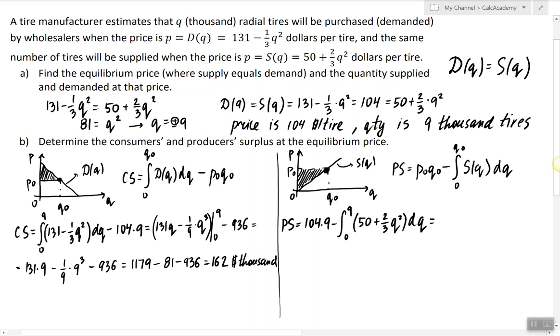So the consumer surplus is $162,000. Now to find the producer surplus we have to do the same with the different integrals. So 104 times 9 is 936 and now we subtract the anti-derivative of the supply function.